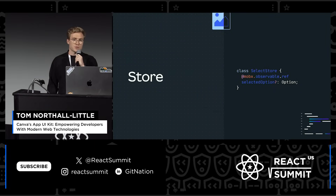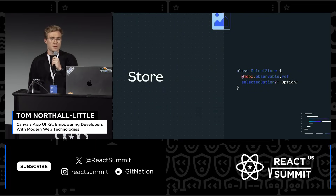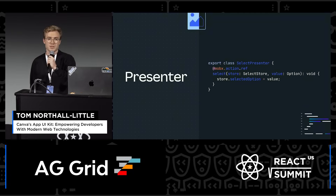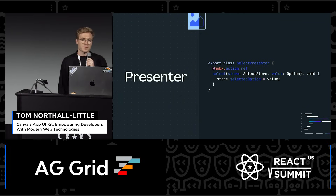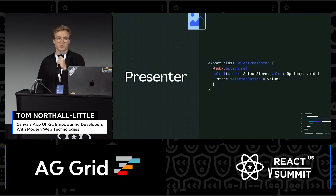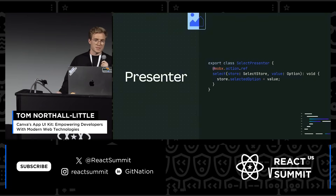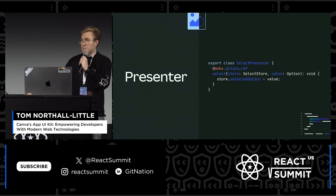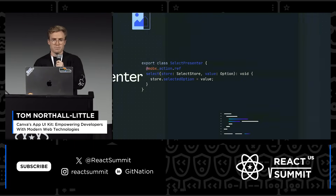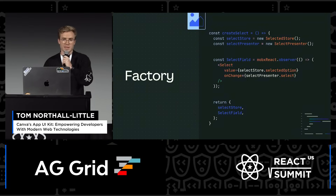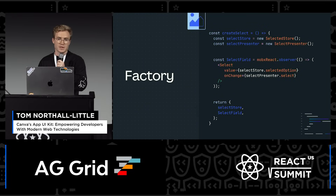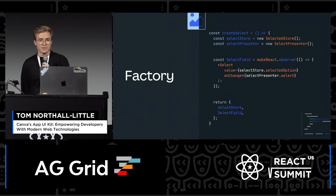Store classes hold state and are used by Presenters or components. Presenters contain the logic for the components — they mutate data, trigger side effects such as analytics and service calls. Presenters enable us to separate the UI from the business logic, making it a lot easier to test and segment everything at a company as large as ours. Finally, the factory function just wires everything together. Ideally, factories don't have any side effects or logic beyond wiring, so there's rarely a reason to test them.